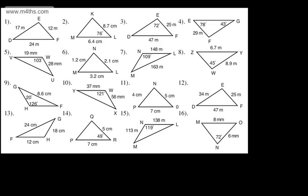In this video, we're going to continue our work with trigonometry and look at a brief introduction of when to use the cosine rule or the sine rule. In our two previous videos on trigonometry, we've looked at the trigonometric ratios, or trig ratios, and Pythagoras theorem. We've used those to find missing lengths and angles in right-angle triangles.